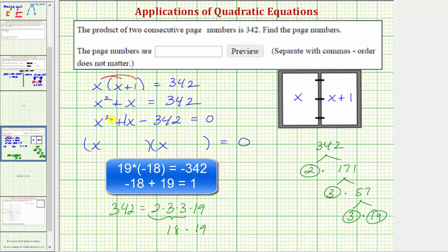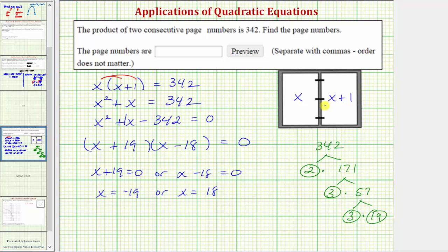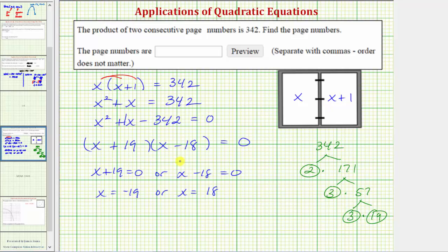And therefore one binomial factor is x plus 19. The other binomial factor is x minus 18. And this product is equal to 0 when x plus 19 equals 0, or when x minus 18 equals 0. So the solutions to the equation are x equals negative 19, or x equals positive 18. But we know a page number can't be negative, and therefore we can eliminate x equals negative 19.